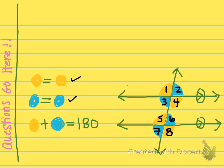For corresponding angles, an example would be 1 and 5 — same color, set them equal. Or 3 and 7 — same color, set them equal. Or 2 and 6 — same color, set them equal. Or 4 and 8 — same color, set them equal.